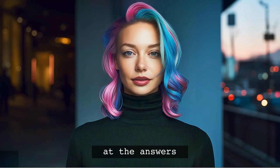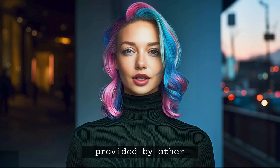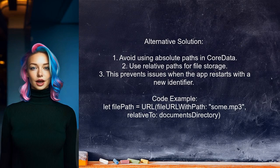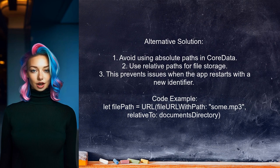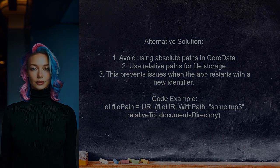Now let's look at the answers provided by other users. One user shared an alternative solution: they realized that when saving the file path, they used the full absolute path in CoreData. However, upon restarting the app, the application identifier changed, leading to a different documents folder path. They suggest using a relative path instead, which can prevent this issue.